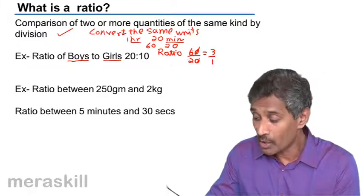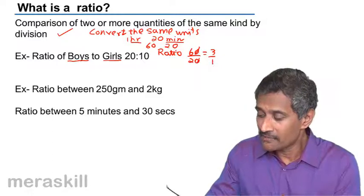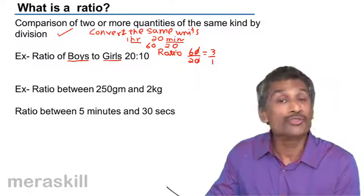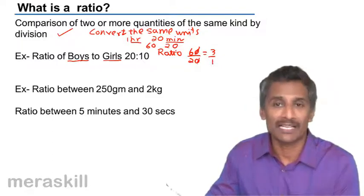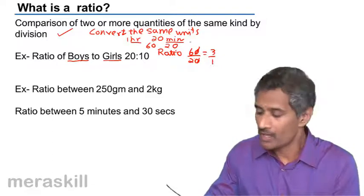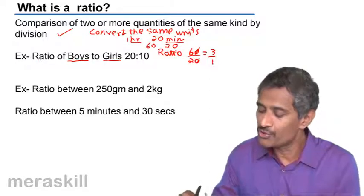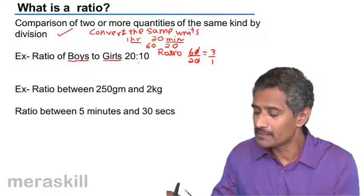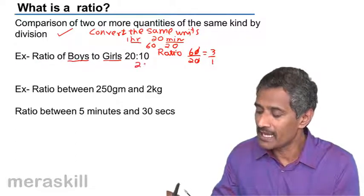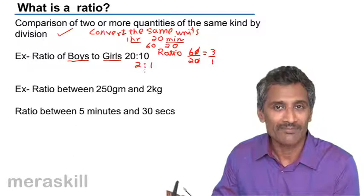We also saw that the final ratio should be in the most simplified form. So the ratio of boys to girls — 20 is to 10 — can be further simplified as 2 is to 1.